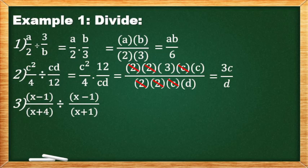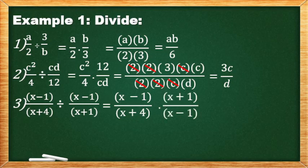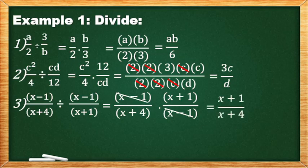Number 3: Copy muna (x−1)/(x+4). Reciprocal natin yung divisor. So, we have times (x+1)/(x−1). So, we can cancel here (x−1). Ano natira? (x+1)/(x+4).